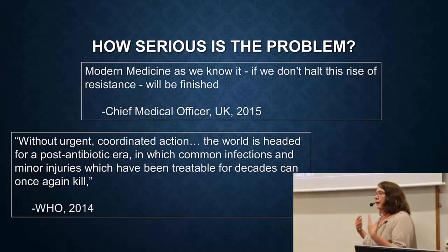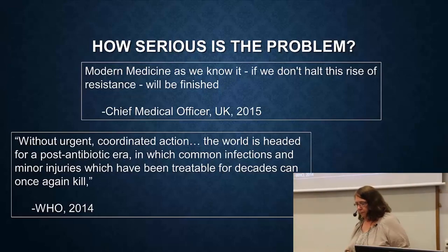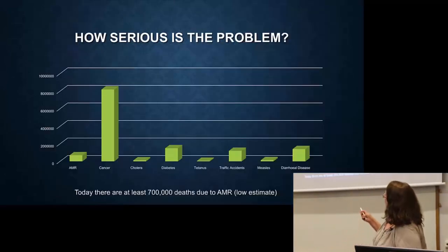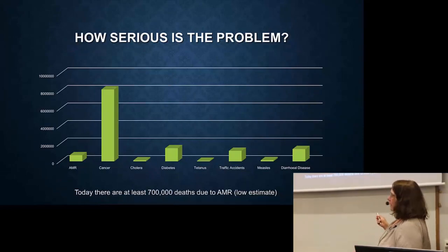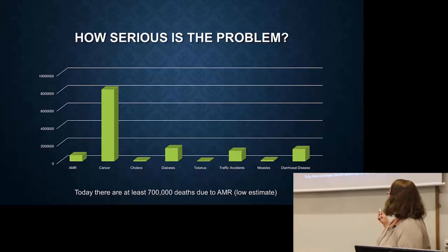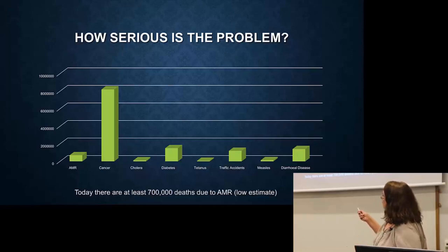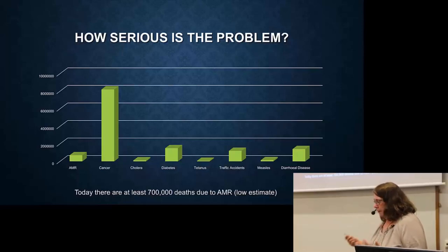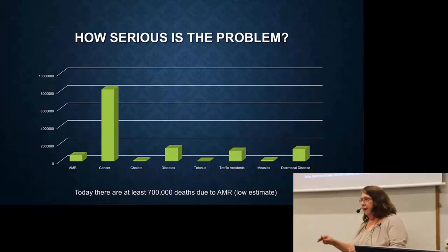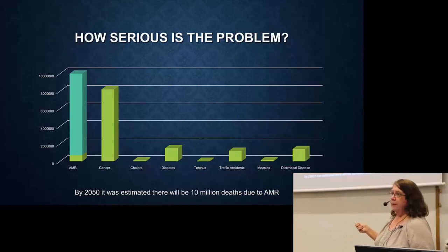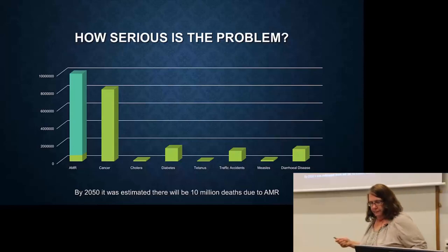An estimate made a few years ago put current deaths due to antimicrobial resistance at about 700,000 per year — and that's a low estimate because data from many parts of the world is lacking. Compare that to cancer at about 8 million deaths. Projections suggest that by 2050, if nothing is done, deaths due to antimicrobial resistance could rise to 10 million per year.